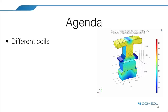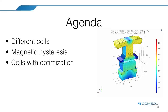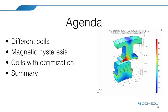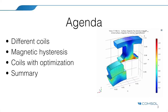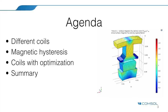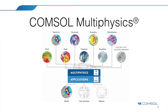First, I want to give you a quick rundown on how numerical simulation and application design work in COMSOL Multiphysics and what kind of coils are available. Then some more words on magnetic hysteresis and some optimization examples covering coils as well. At the very end, I will mention some further resources where you can find more information, including full-length webinars with more technical detail than what we will have time for today.